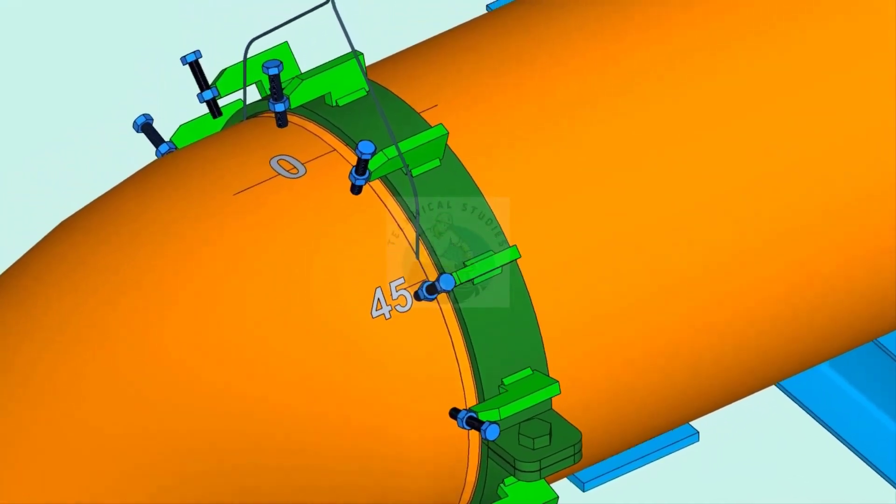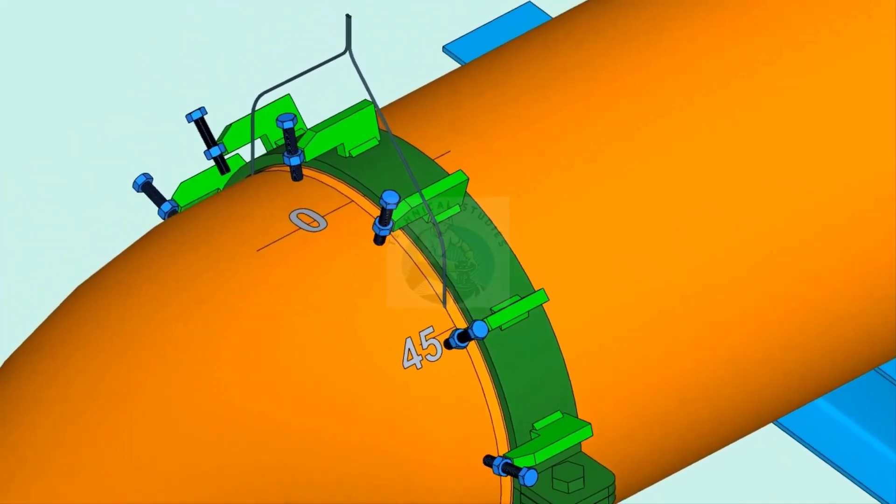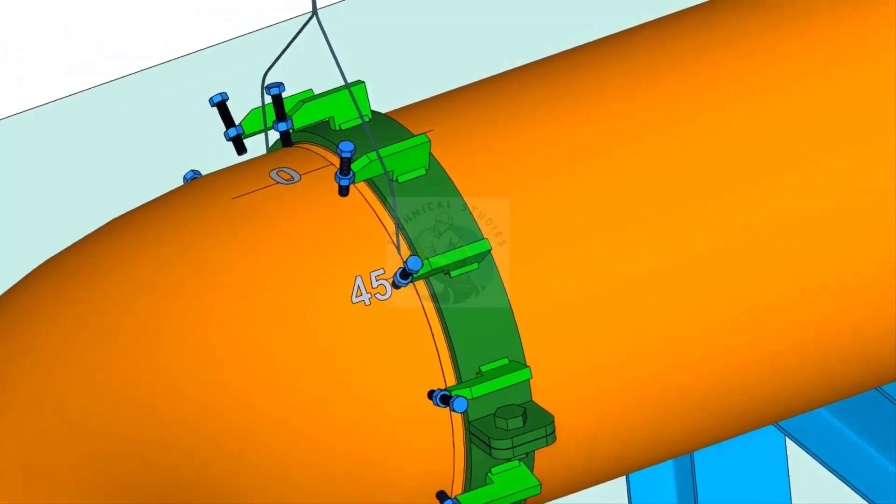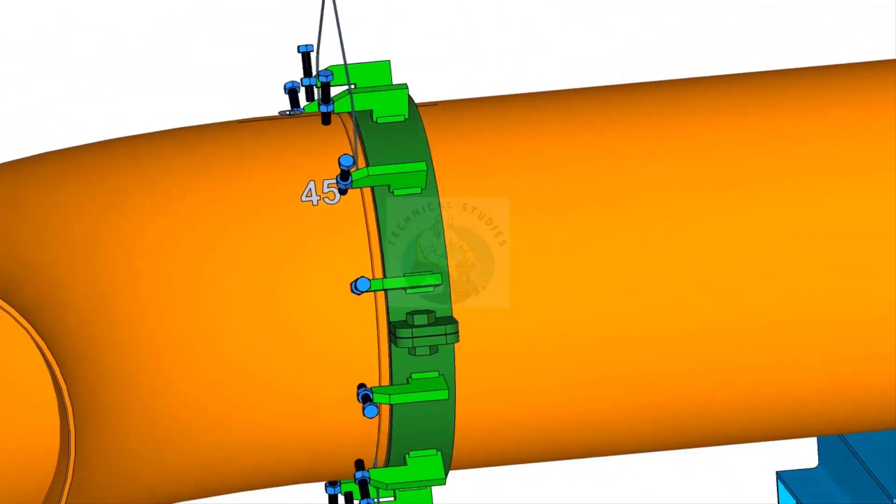Put the gap rod in the joint. Now slowly rotate the elbow until the 45 degree mark comes opposite to the 0 mark on the pipe.